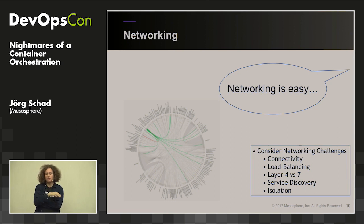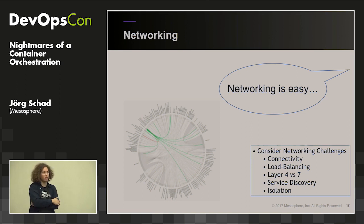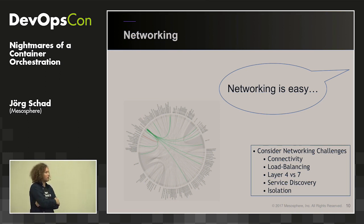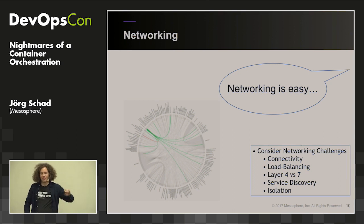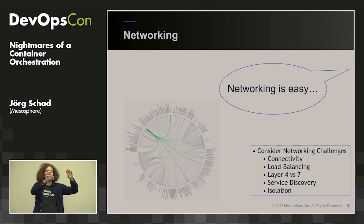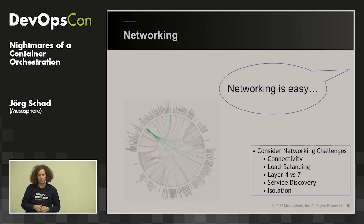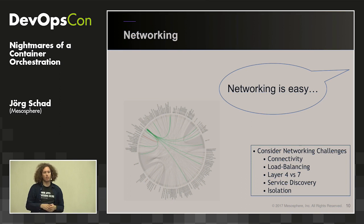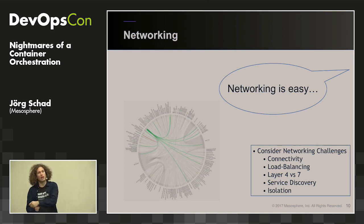Istio is a service mesh built mostly on Kubernetes but currently being ported to Mesos. It tries to solve the networking problem by running a sidecar container next to each application container — imagine a load balancer container where all network traffic passes through it. This gives the control plane a chance to configure authentication and define who is allowed to talk to whom.